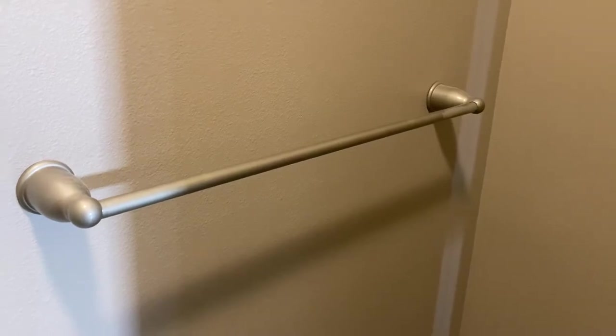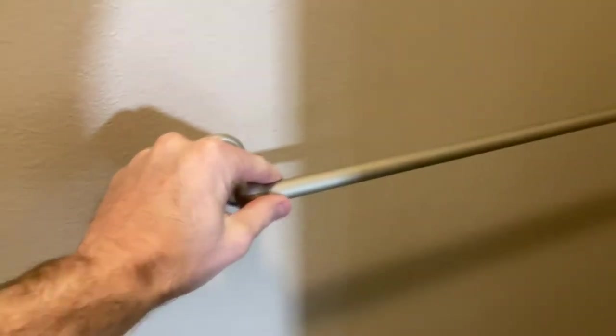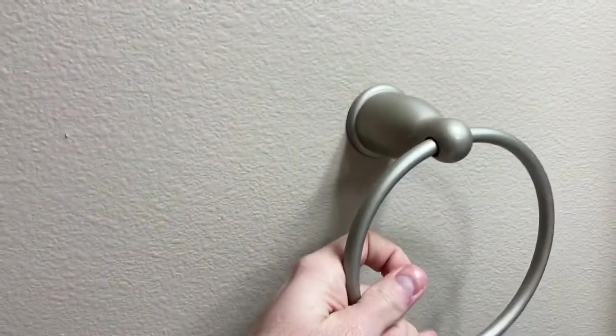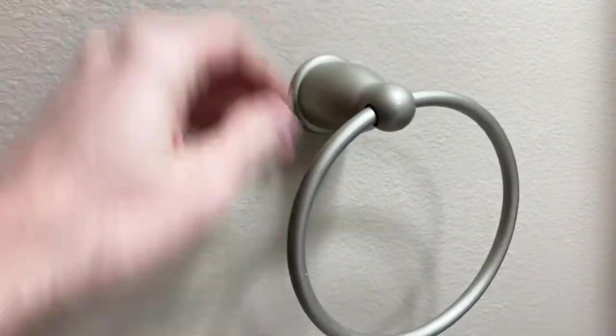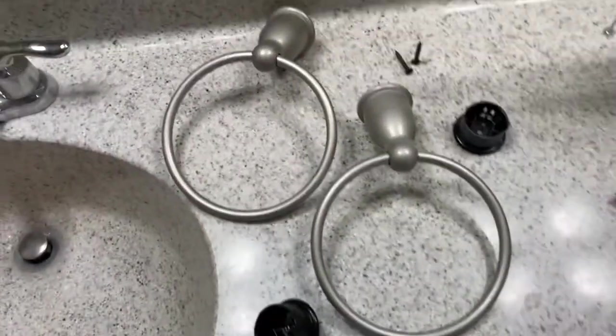All right, welcome. Quick video for you today. If you have a towel rack or towel bar, a towel ring like this, and you're interested in installing it or taking it off the wall, hopefully this video can help you out. It's a pretty simple job and you'll need some basic tools.